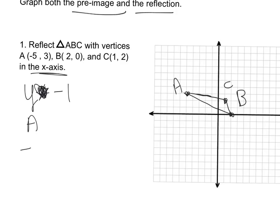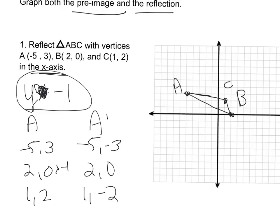So A becomes, instead of negative 5, 3. The new image is going to be negative 5, negative 3. 2, 0 for B still becomes 2, 0 because 0 times negative 1 is still 0. And then you have 1, 2, which becomes 1, negative 2. So I multiply all the y-values times negative 1.